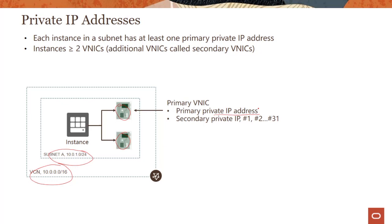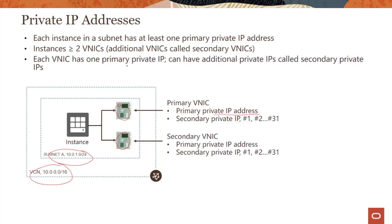You're not restricted to one private IP address per instance. The first is the primary private IP, but you can also have additional private IPs called secondary private IPs. You can have 31 additional secondary private IPs, and this pattern is repeated across the VNICs you have. In some cases you can have something like 52 VNICs, so you can have a whole set of primary and secondary private IP addresses.